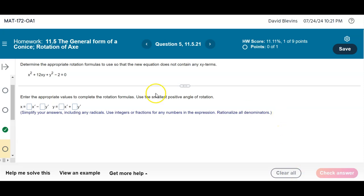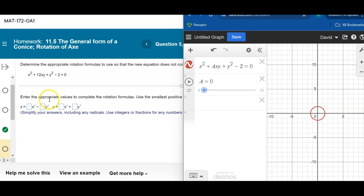Patriot class, I want to show you this problem from the 11.5 homework set. Here we're talking about rotation of axes and I want you to see what we mean by rotation of axes. So what I've got here is the equation written over here, but I have an a in front of the xy term.